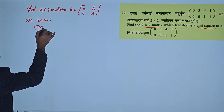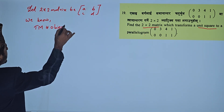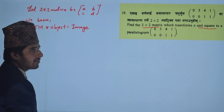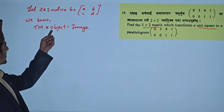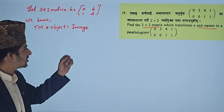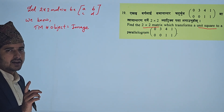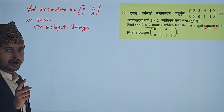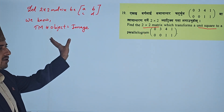The transformation matrix into object is equal to image. This formula tells us what the transformation does. Object into transformation matrix is equal to image. This is a matrix. A into B into A — this is a universal formula.